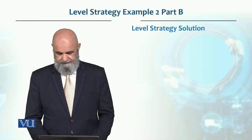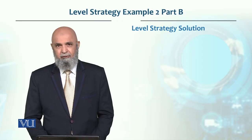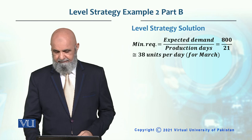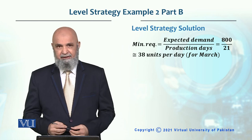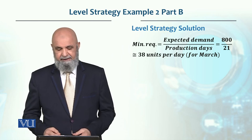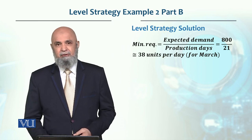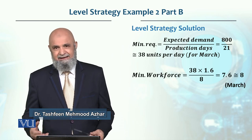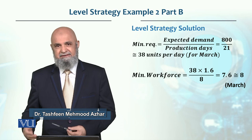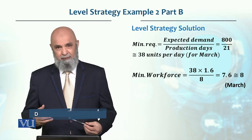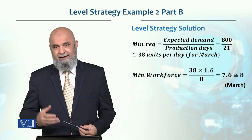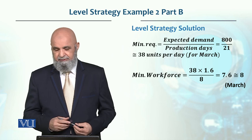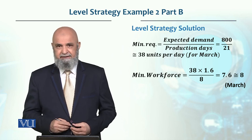Now, let's find the solution for this problem. In this case, we have the minimum requirement. Like I said, in March there is 38 units per day. So, what will the workforce need to be? Minimum workforce is 38 units multiplied by 1.6 hours for each unit, divided by 8 hours, which one worker contributes — so our total workforce is 7.6.